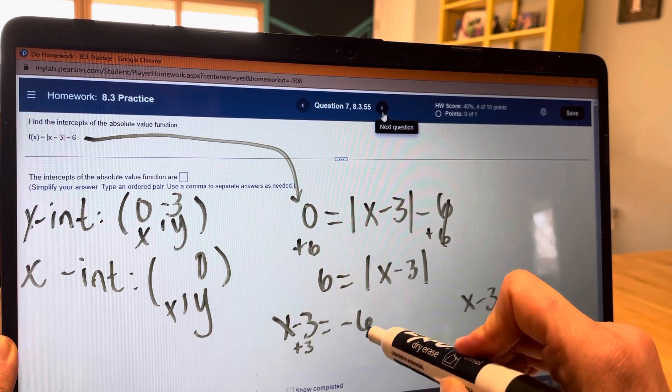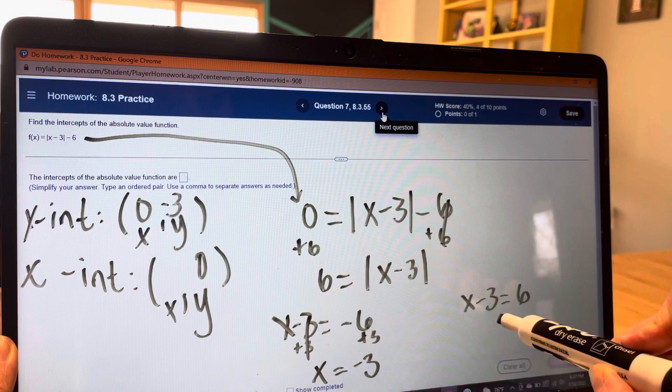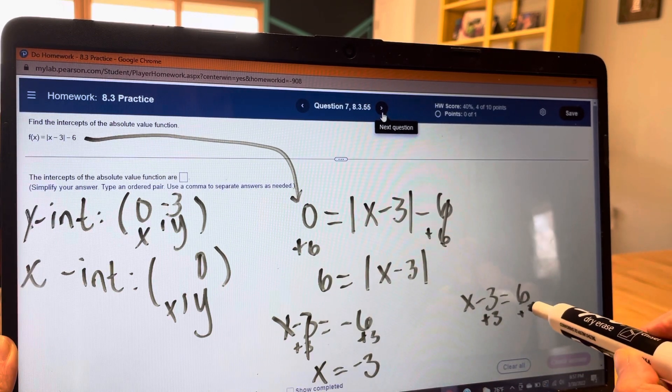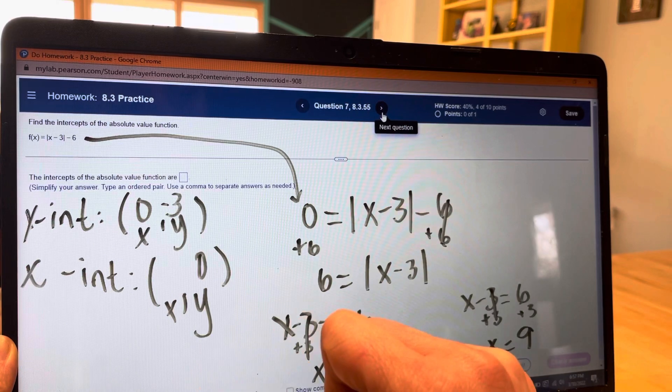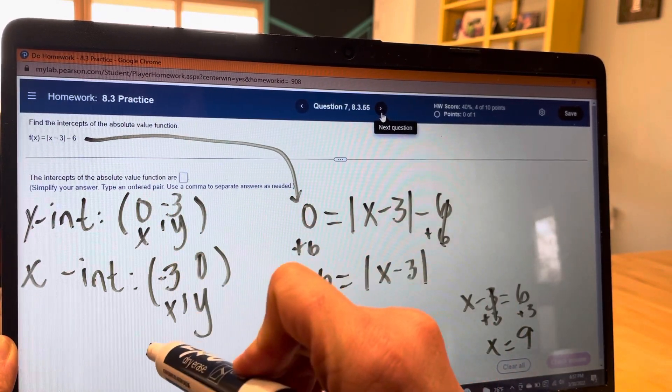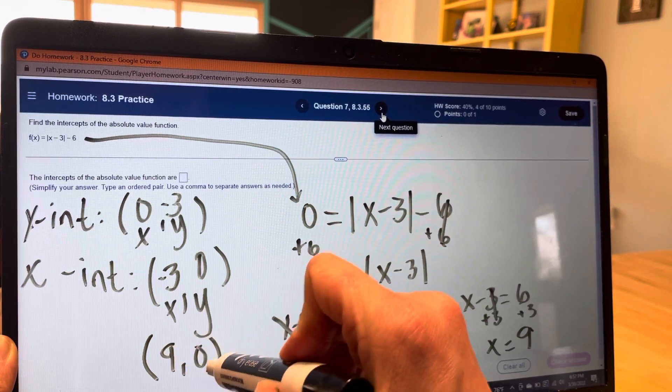So we add 3 to both sides. x equals negative 3. Same here. x equals 9. So one of our x intercepts is negative 3, 0. The other x intercept is 9, 0.